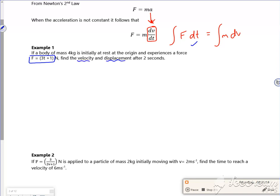Right, so my force is mass times acceleration. So my force is 3t plus 1, the mass is 4 dv dt. If I use my separation of variables that I did on that side.